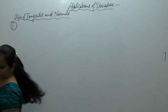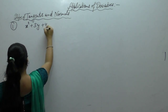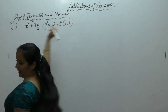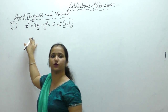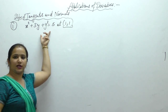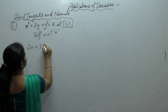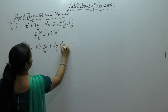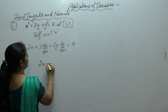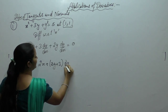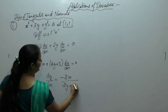Question number 1: find the slope of tangent and normal to the curve x² + 3y + y² = 5 at (1, 1). We want to find dy upon dx, so differentiate this equation with respect to x. We get 2x + 3(dy/dx) + 2y(dy/dx) = 0. From here, dy/dx = -2x / (2y + 3).